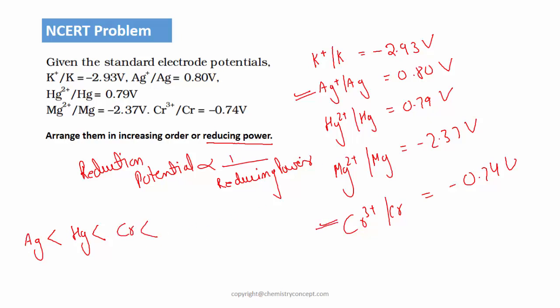After chromium comes magnesium, and potassium, which has lowest reduction potential, will have highest reducing power.